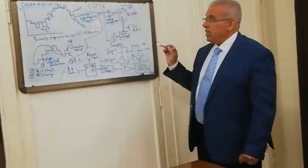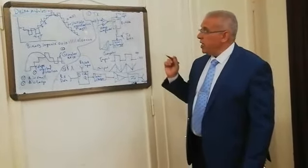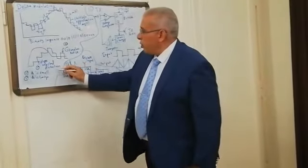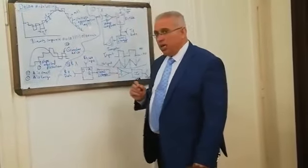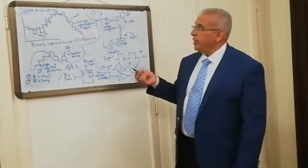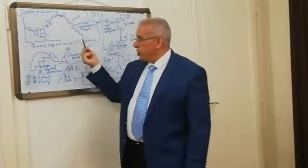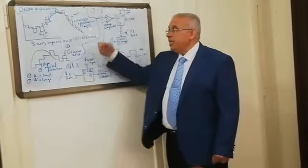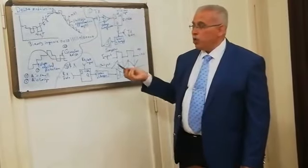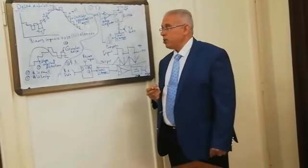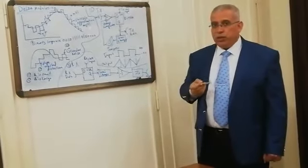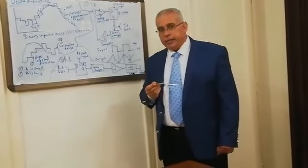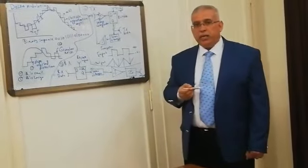This technique is very suitable for voice communication, but as mentioned we have three problems: slope overload distortion, granular noise, and inability to transmit DC. The first two problems can be overcome by using Adaptive Delta Modulation, and the third by using Delta-Sigma Modulation. Adaptive Delta Modulation will be the topic of our next lecture, and Delta-Sigma Modulation will follow after that. Thank you — if you have any questions, don't hesitate to contact me through the university learning system.